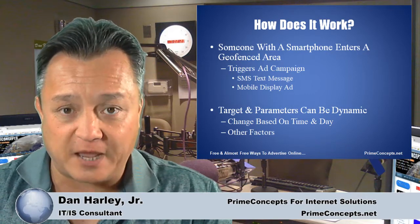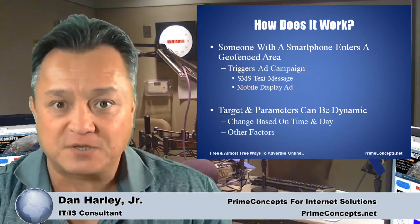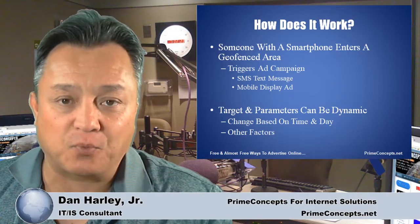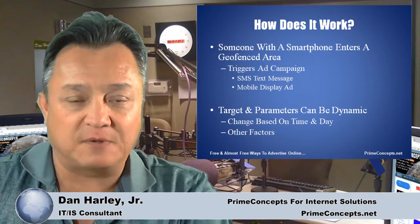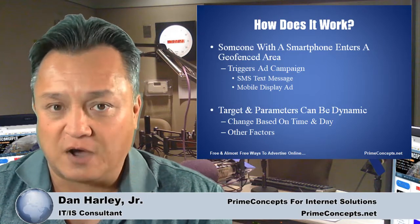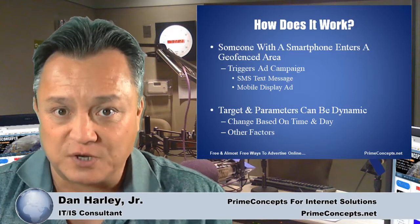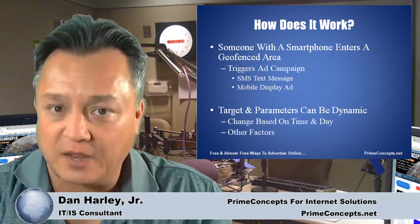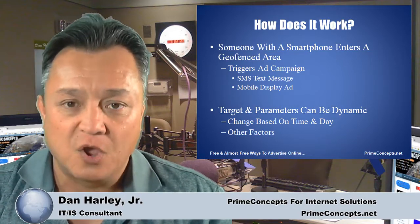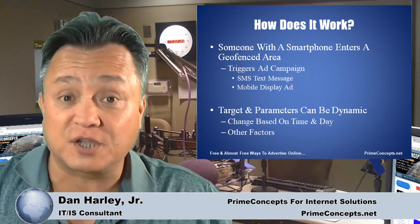With mobile display ads, as people are searching with their phones and looking for something, these ads will pop up based on the location they're at. The targeting parameters can also be dynamic. For instance, we can set it up so the ads don't activate until my friend's restaurant is open. Then during lunch, we hit a certain geo-fenced area with a lunch advertisement, and later in the day with a dinner or happy hour advertisement. All these factors can be adjusted or changed.